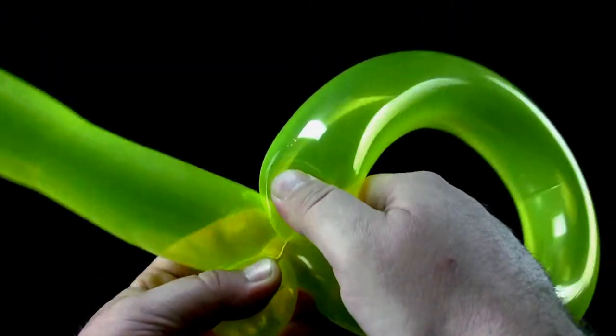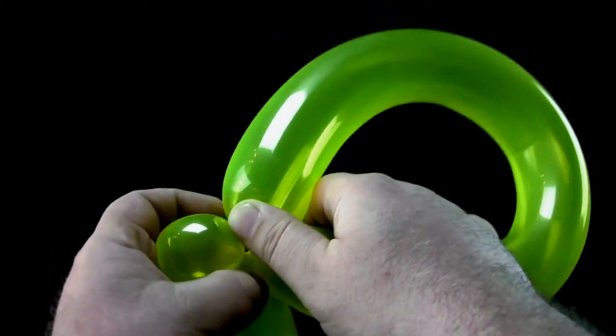Twist a small bubble at the beginning of the loop around the balloon at the other end of the loop.